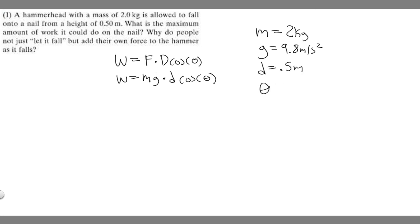And then theta. Theta is the angle between the force and the direction it travels. But keep in mind it's going to be falling down. So the force pulling it down is gravity, or the force due to gravity, which is mg.